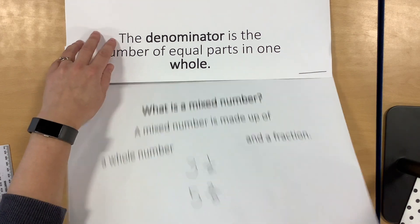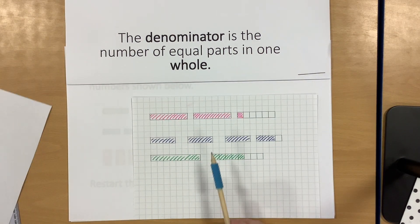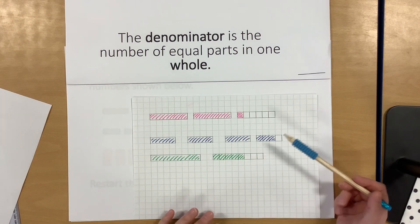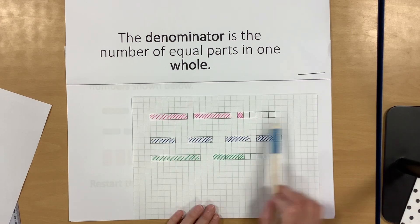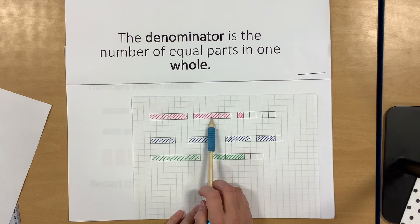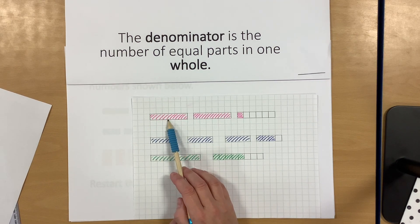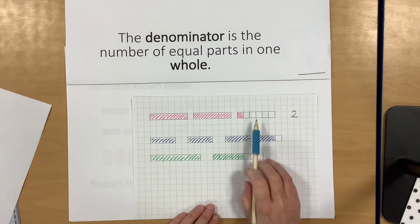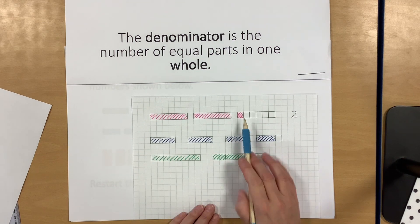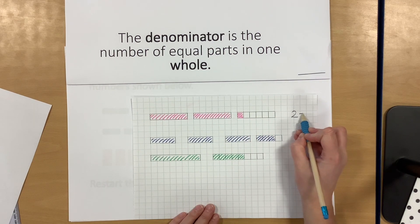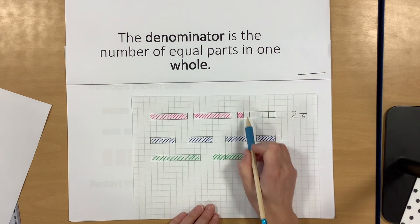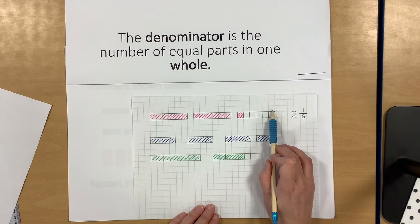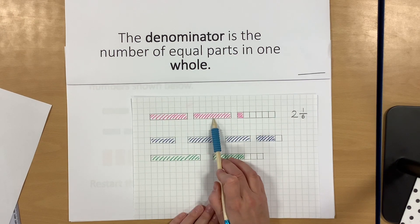Let's have a look at what it might look like if we were to draw it. I'm going to do some for you — you can look at what I'm doing, listen to what I'm saying, and then you'll have some to try yourself. Let's look at the pink one first. We've got two shapes which are completely shaded in: one whole, two wholes. This one has only got parts shaded in — it's divided into six equal parts, so my denominator is six. One of those parts is shaded, so this shape represents one sixth. We have two wholes and one sixth.